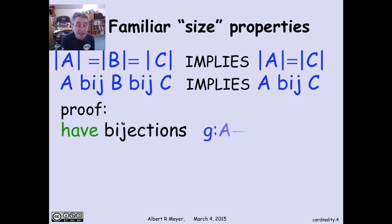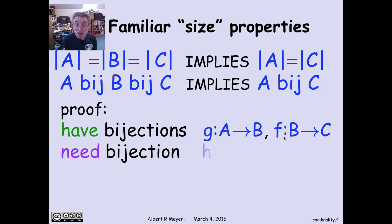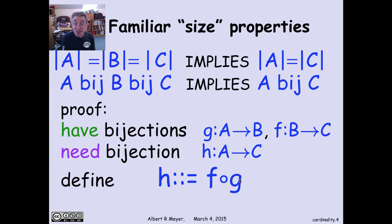By definition, since A Byge B, that means that you have a bijection g from A to B. And since B Byge C, you have a bijection f from B to C. Now, I need from these two bijections that I'm given, I need to find a bijection between A and C. Well, that's easy. What you do is you use g to go from A to B, and then you use f to go from B to C, and you compose them, and that gives you the needed bijection from A to C. So you find h to be the composition of f and g, and it's easy to check that if g and f are bijections, then their composition is a bijection. So that's how I find the needed bijection from A to C. So this property works out just fine.